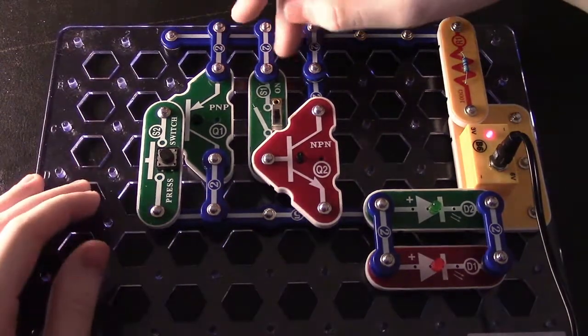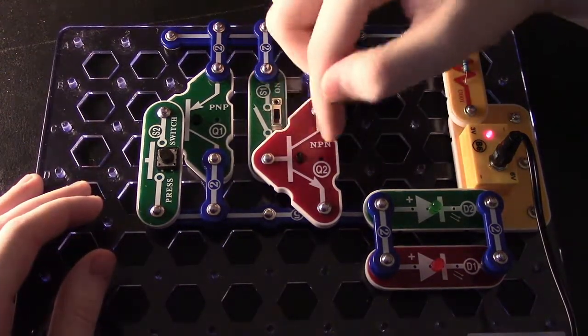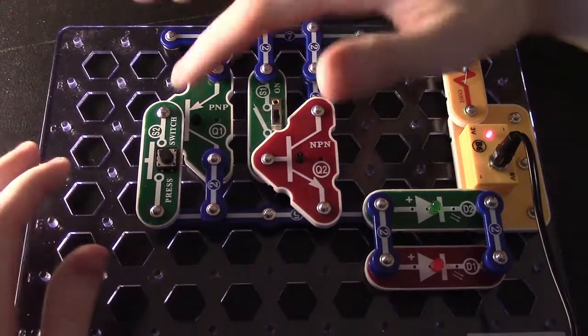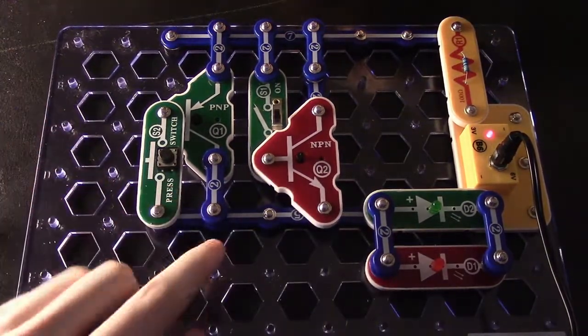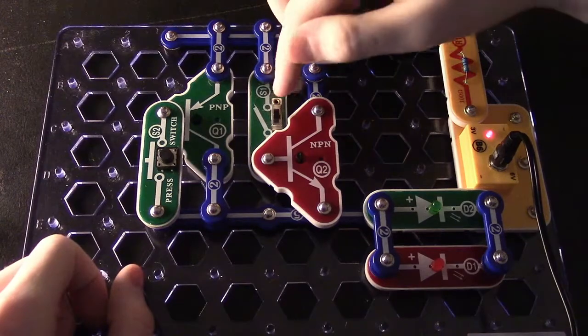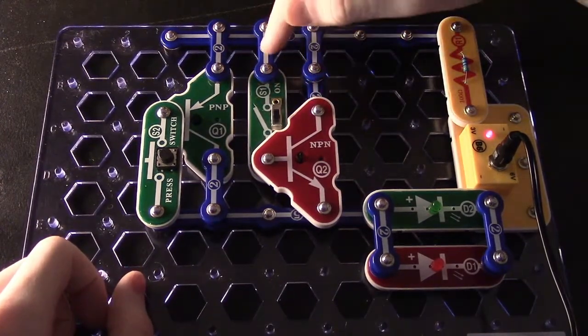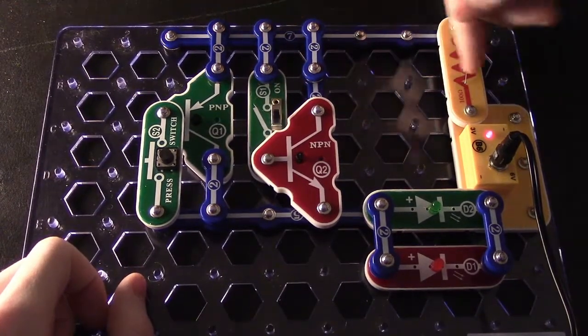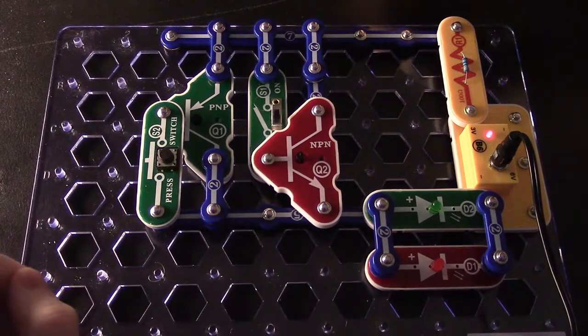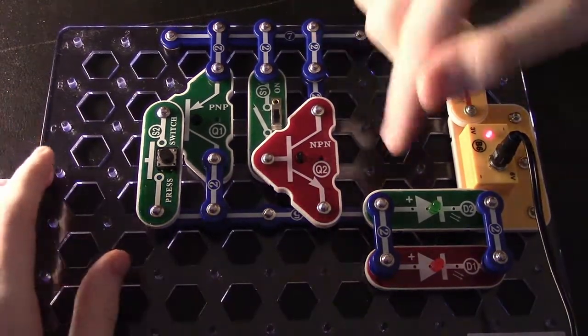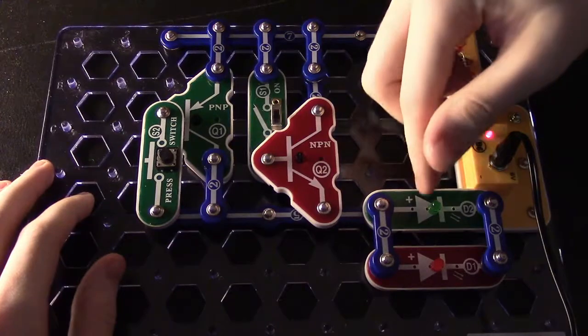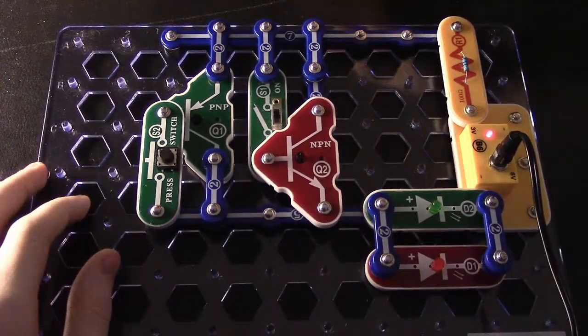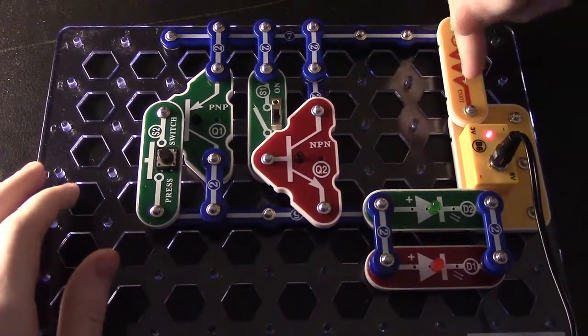As you can see, we have a switch to activate our NPN and a push button to activate our PNP. The push button is on the low side connected to ground. Our switch for the NPN is connected to the high side, which is the positive from the battery. We've got two LEDs here, a green one and a red one, and a 100 ohm resistor to limit our current through the whole circuit.